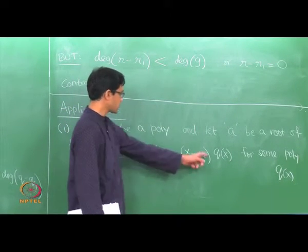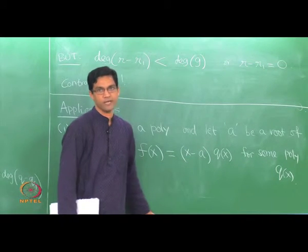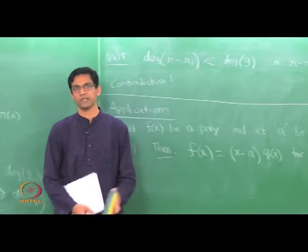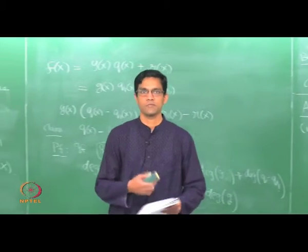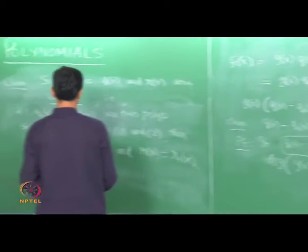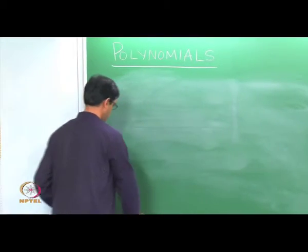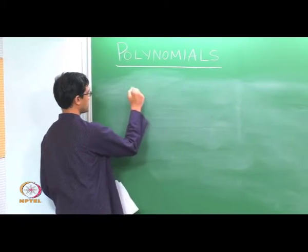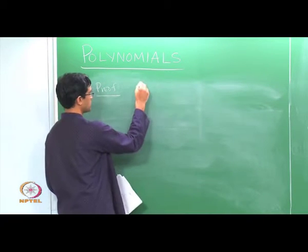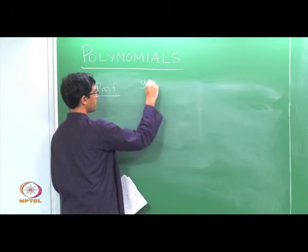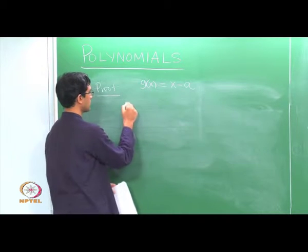Observe: if f has this form, and you substitute x = a, you will surely get 0 because there is a factor (x − a) in front. The key content here is really the converse: that if f(a) = 0, then f must be a multiple of (x − a). Let us prove it just using the division algorithm. We take g(x) to be (x − a) and apply the long division.